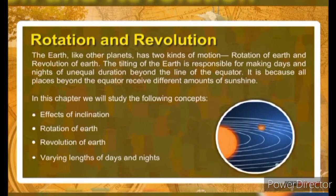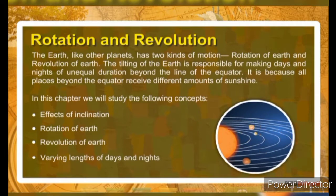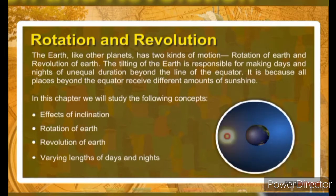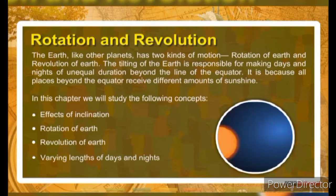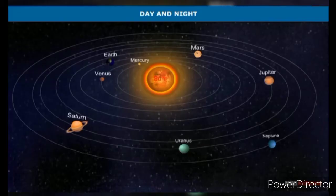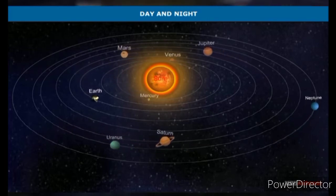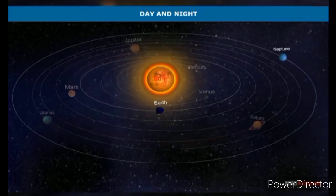The earth, like other planets, has two kinds of motion: rotation and revolution. The tilting of the earth is responsible for making days and nights of unequal duration beyond the line of the equator, because all places beyond the equator receive different amounts of sunshine. In this chapter we will study the following concepts: effects of inclination, rotation, varying length of day and night, and day and night.